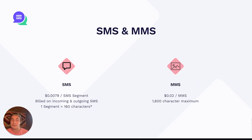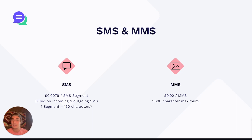Next up, we have SMS and MMS. SMS is going to be purely text messages, whereas MMS is going to be a text message paired with a file. For SMS, it's going to be $0.0079 per SMS segment — about eight-tenths of a penny. It's billed on incoming and outgoing SMS, and one segment equals 160 characters in most cases. There are some characters such as emojis that will bring that character count down. If you are using Texla, we have a segment and character counter below your message, so you always know how much you're being billed. Twilio also has a segment calculator that I'll leave linked in the description.